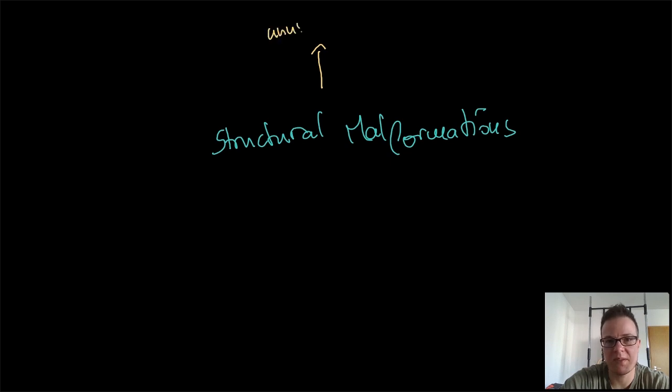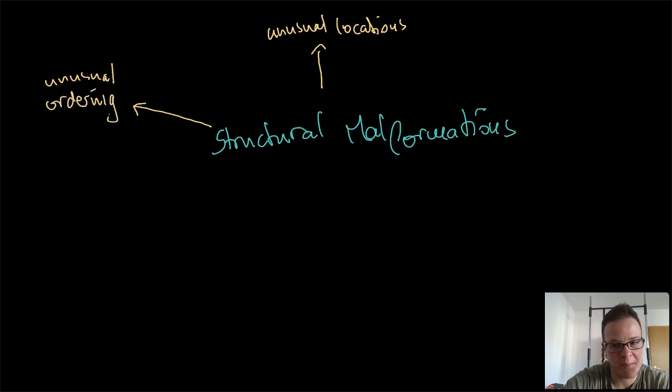One possible malformation is an unusual location. This could be, for instance, if you put the section table into the overlay of a file. Any structure that is in a location where you don't expect it can be a malformation. An unusual ordering of structures as well, like sections that are shuffled. Usually you expect them to be in the order they appear in the file, but if you shuffle them, that's possible too. You can have loops in structures where you don't expect them.